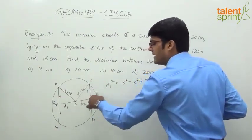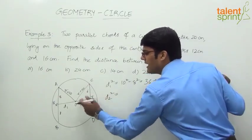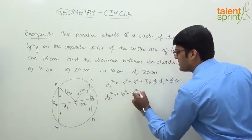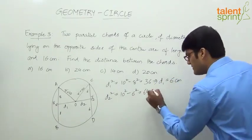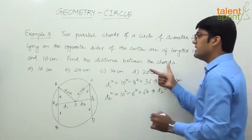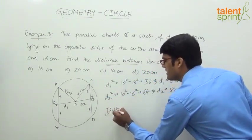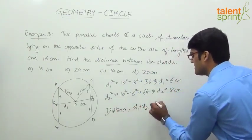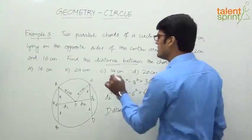Applying the Pythagorean theorem to the second right-angle triangle OCY: d2² = 10² − 6² = 100 − 36 = 64, so d2 = 8 centimeters. The required distance between the two chords is d1 + d2 = 6 + 8 = 14 centimeters.